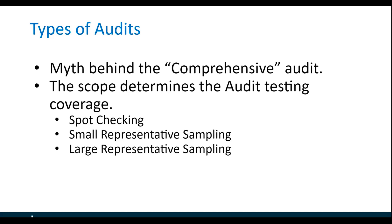The scope determines the audit testing coverage. Terms you'll hear include spot checking, small representative sampling, and large representative sampling. Most in this industry agree there's no need to test every page of every website. Most web applications and large websites use core component libraries and templating, so representative sampling by templates, core components, and transaction paths is effective. How large that representative sample is really drives the cost of a digital accessibility audit.